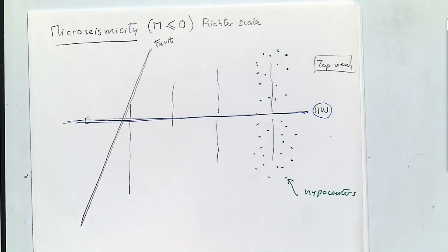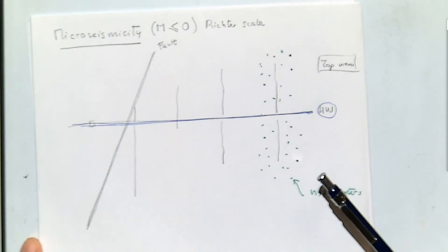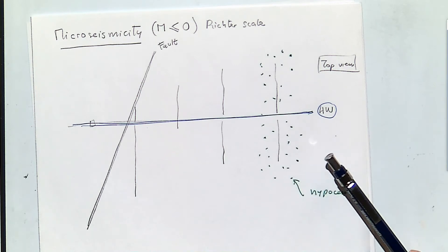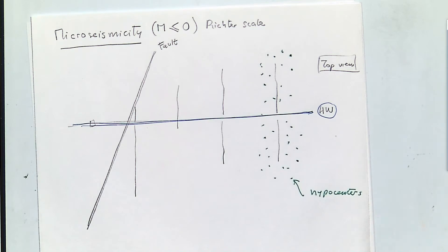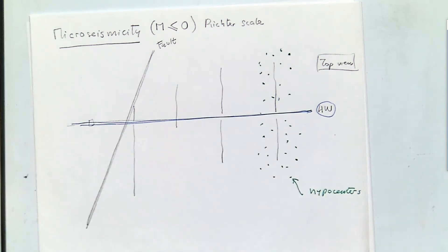The biggest earthquake caused in Oklahoma due to water injection was close to 4.5 — that was quite large and not micro anymore. In some hydraulic fracture completions, especially in Canada, seismic events go all the way up to magnitude four. In general we don't want to cause such high seismicity; micro seismicity should stay below zero, in the negative values.